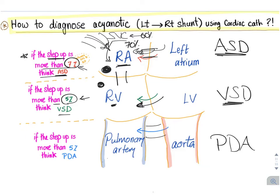For PDA (patent ductus arteriosus), we measure oxygenation in the right ventricle and the pulmonary artery. They should be the same normally, but if oxygenation in the pulmonary artery is greater than in the right ventricle, there is a shunt from the aorta to the pulmonary artery — that is the PDA. The threshold is also 5% or more.